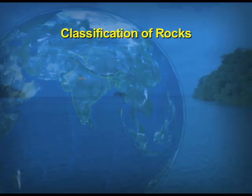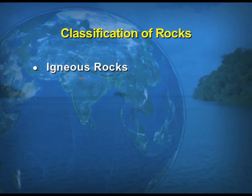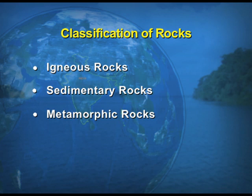We take up the classification of the rocks. Rocks are generally classified into three types: one, igneous rocks; two, sedimentary rocks; three, metamorphic rocks.